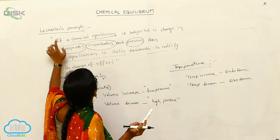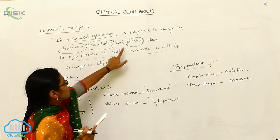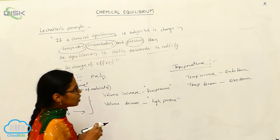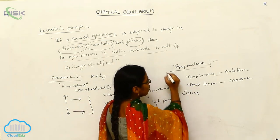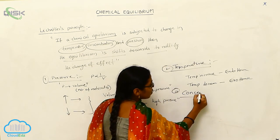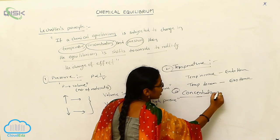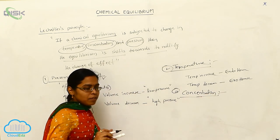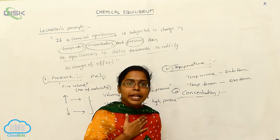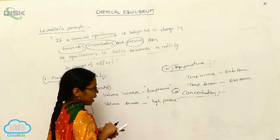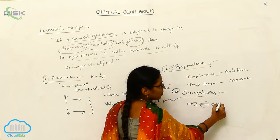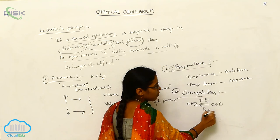So, based upon Le Chatelier's principle, what are the main factors? First factor: the pressure effect. Second factor: the temperature. Third factor — the last one — is the concentration. Based upon the concentration, we have to say the shifting of chemical equilibrium — to the forward reaction side or to the backward reaction side. For example, taking a general equation: A plus B gives C plus D. This is called the forward reaction; the reverse is called the backward reaction.